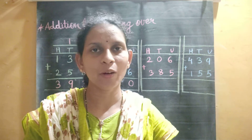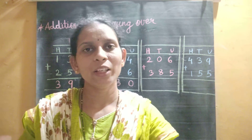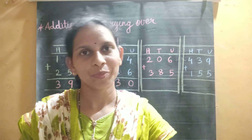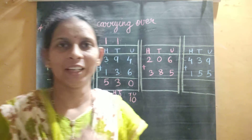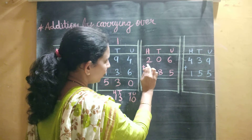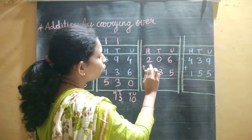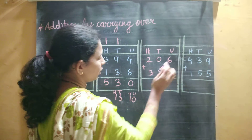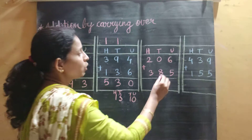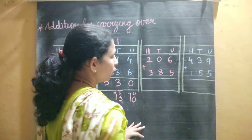So students, did you understand? If you get a 2-digit number, write the units digit down in the answer and carry over the other digit. Now we will see the third example. It is 206 plus 385. Here 0 is at the tens place — no number at tens place — so we read it as 2 hundred and 6. And the second number is 385. First we will do addition at the unit place: 6 plus 5.